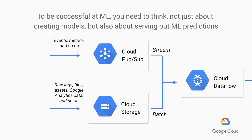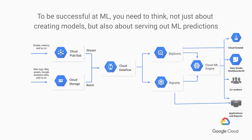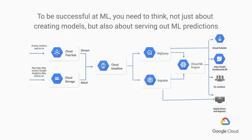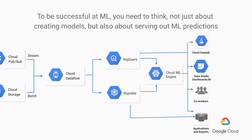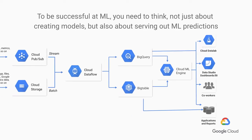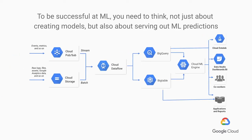However, the key reason you're doing machine learning is on the right-hand side of this diagram. You want to serve out those predictions to decision makers using notebooks, dashboards, applications, reports. Operationalizing a machine learning model — by which we mean taking a model that's trained and getting to the point where you can serve out these predictions.